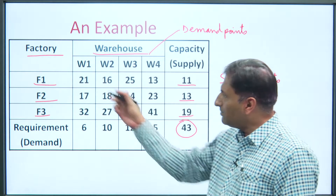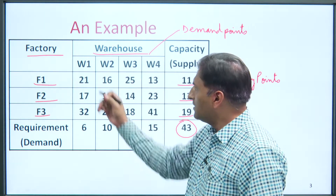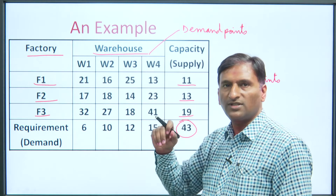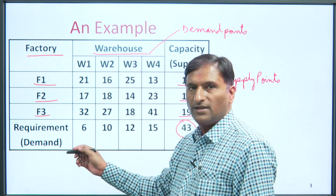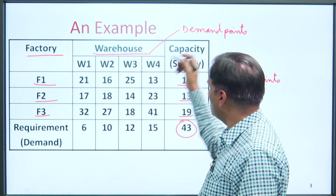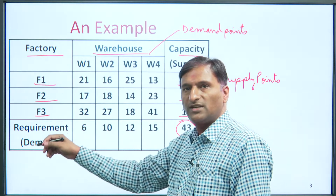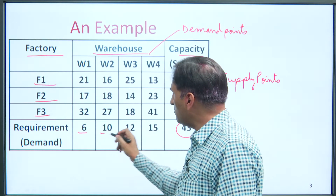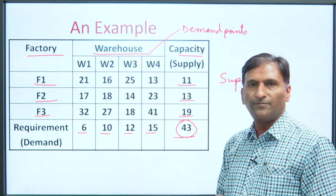These units are produced and then transported to different geographical locations — our four warehouses W1, W2, W3, W4. The demand at these warehouses — their storage capacity or demand — is 6 units, 10 units, 12 units, and 15 units respectively. Again, the total is 43 units.